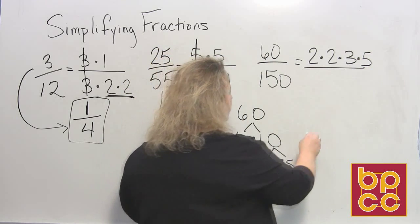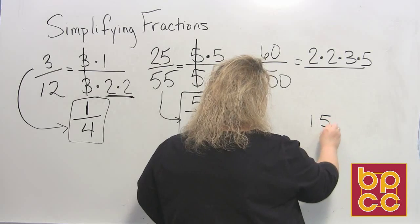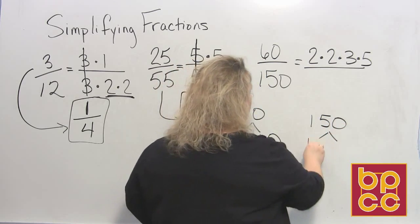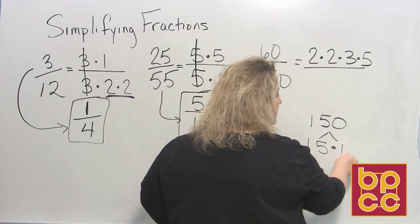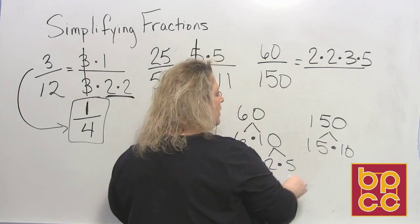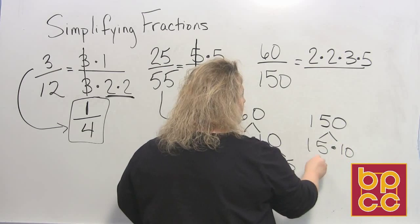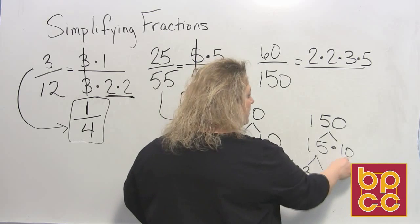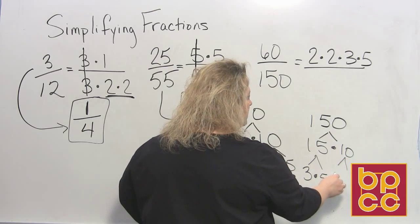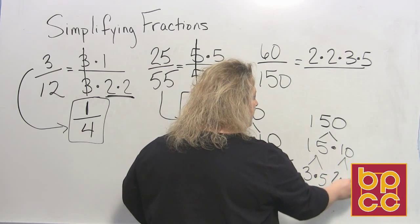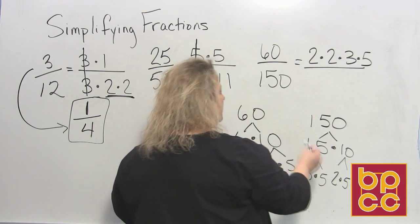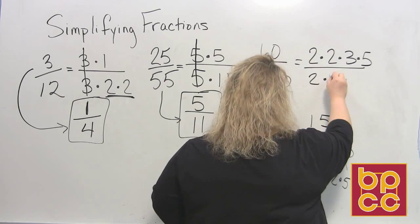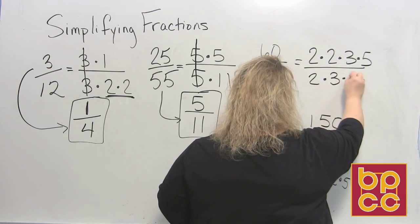Then I'm going to do the same thing to 150. 150 ends in a zero, so that would be 15 times 10. 15 is 3 times 5. And then 10, I'm going to run out of room. 10 is 2 times 5. So the prime factorization for 150 is a 2, a 3, and two fives.